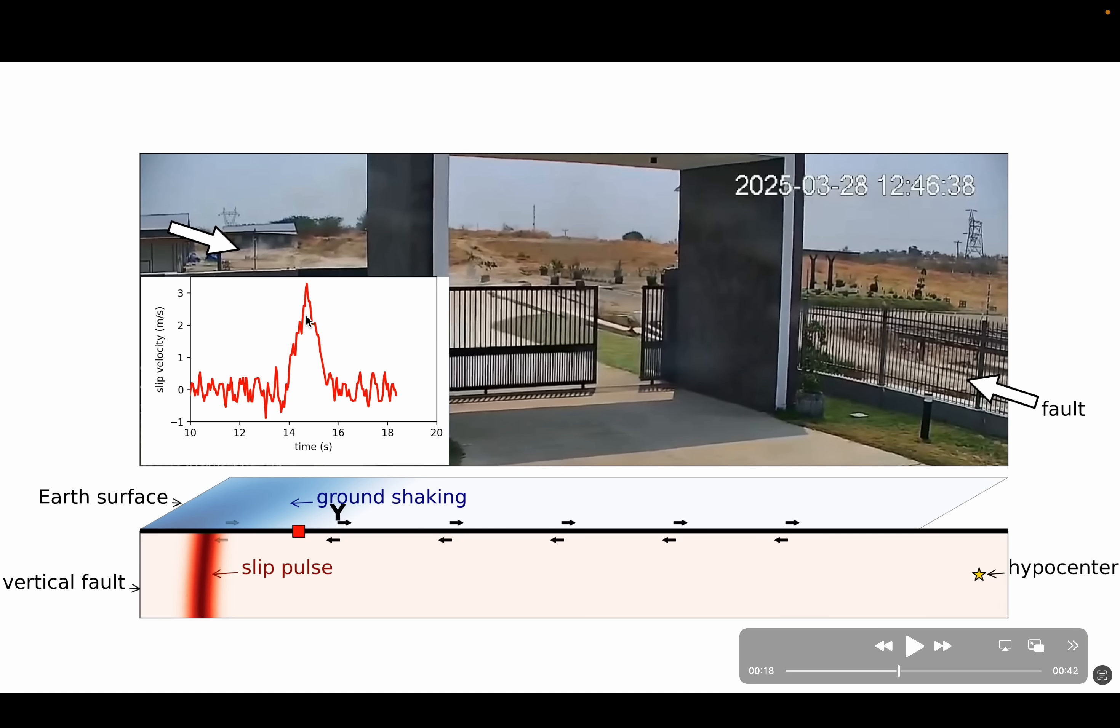Now this is in contrast to the speed of the rupture itself as it propagates along the fault at several kilometers per second, so faster than an airplane.